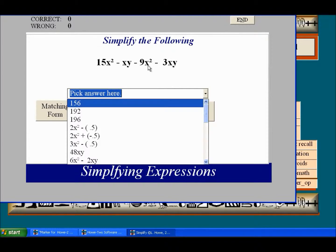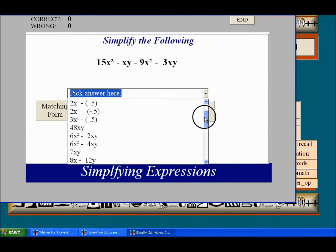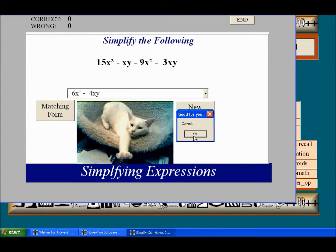15x squared minus 9x squared is 6x squared minus 4xy. So we're looking for 6x squared minus 4xy. And that's right. And it says I'm right.